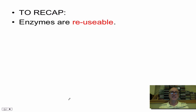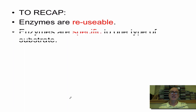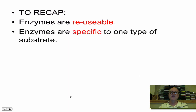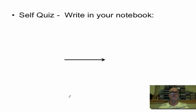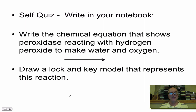Let's recap. Enzymes are reusable — they can be reused to catalyze many reactions. They are specific to one type of substrate, and they catalyze two main types of reactions. A great example of decomposition happens in your stomach as proteins from your hamburger are broken down into their amino acid monomers. A synthesis reaction then occurs in all your cells where you build your protein polymers from all the amino acids your cells have absorbed. Thank you, and I hope this helped you.